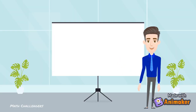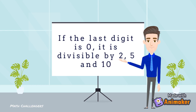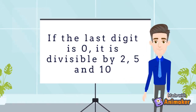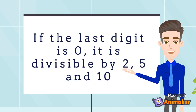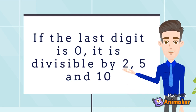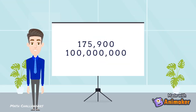If you notice, the three rules have something in common. If the last digit of a number is 0, that number is divisible by 2, by 5, as well as by 10. For example, 175,900 and 100,000,000 are divisible by 2, by 5, and by 10.